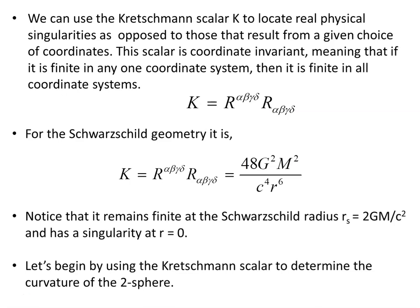This scalar is coordinate invariant, meaning that if it is finite in any one coordinate system then it is finite in all coordinate systems. If it's non-zero in one coordinate system then it's non-zero in all coordinate systems. For the Schwarzschild geometry, the Kretschmann Scalar remains finite at the Schwarzschild radius. Rs is 2GM/c² and has a singularity at r equals zero. The Schwarzschild coordinates metric looks like it has a singularity at the Schwarzschild radius, but that's just due to the choice of coordinates, and the Kretschmann Scalar points out that the curvature is still finite there.